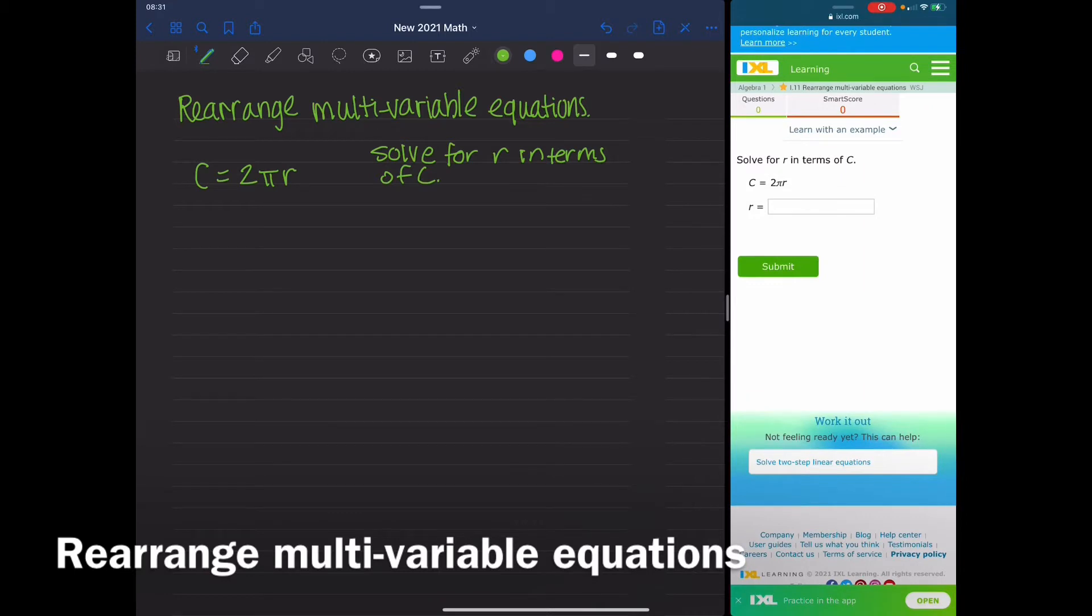The first thing we need to recognize is that this is all multiplication. Every single term is being multiplied together. So what it means is that we want R on one side and C on the other side. But since we're trying to get R by itself, here's what we need to do. We need to divide by 2π because this is all multiplication.